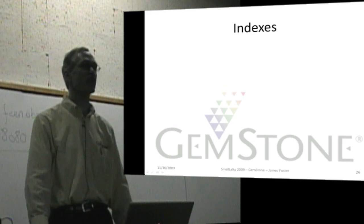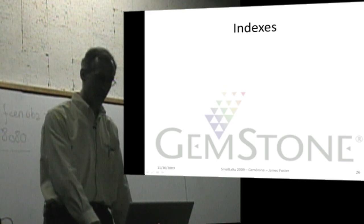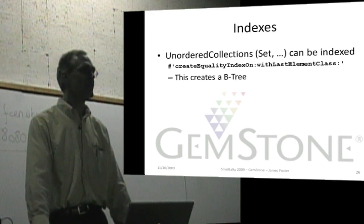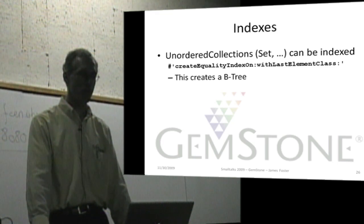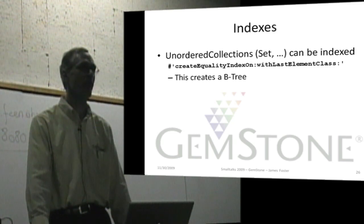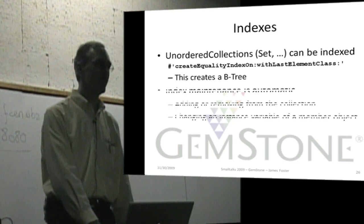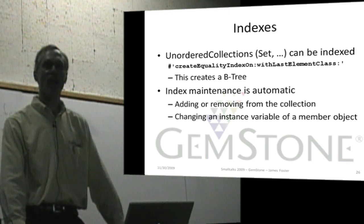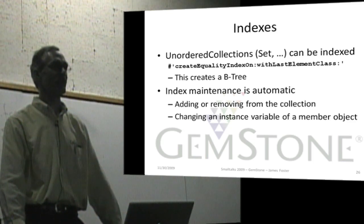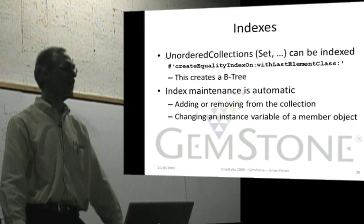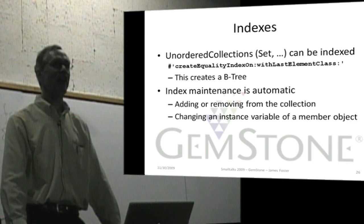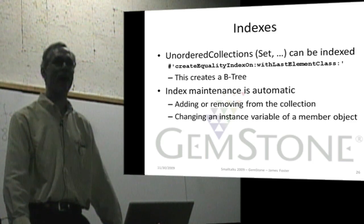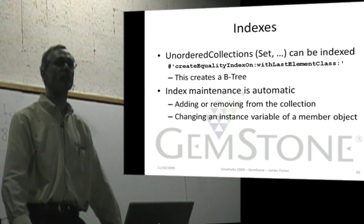When you have millions or billions of objects in your system, querying becomes important, so GemStone supports indexes. For unordered collections — sets, identity sets, bags, and things like this — you can create indexes. For example, you can create a quality index and give a path to specify it. This creates a B-tree for implementation, and index maintenance is automatic. So adding or removing items from the collection, or modifying an instance variable on an object in an indexed collection that participates in the index, will cause the index to be updated automatically. You don't have to programmatically update indexes — simply modifying an object and the index will be updated.